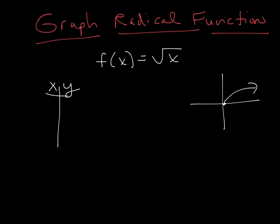Now this one's a little unique in that we're not allowed to plug in anything that makes negatives inside that square root, because that's not in the domain of this function. We're not allowed to take the square root of a negative number. So our lowest possible value we're allowed to plug in for x is 0. And if we're smart about it, we'll also do 1, 4, and even 9 — numbers that give us perfect squares so we get nice whole numbers instead of decimals.